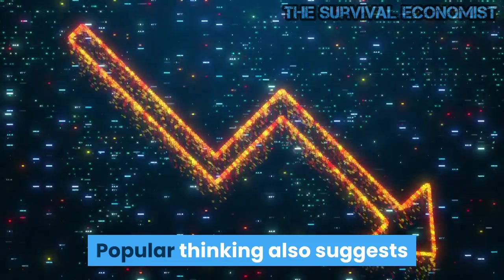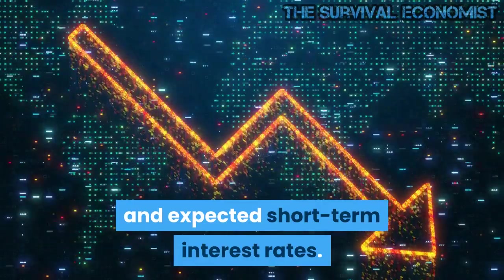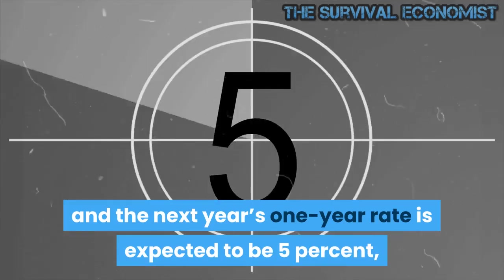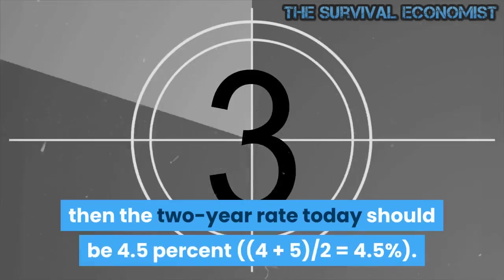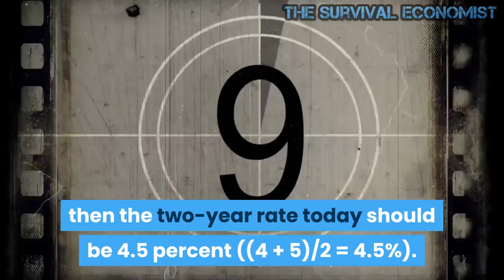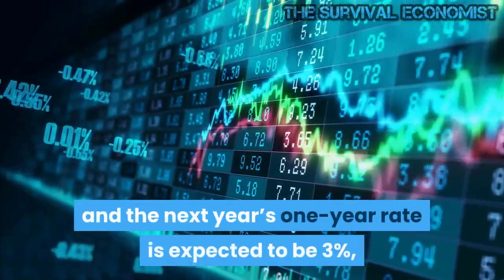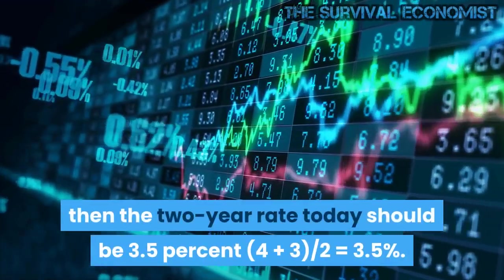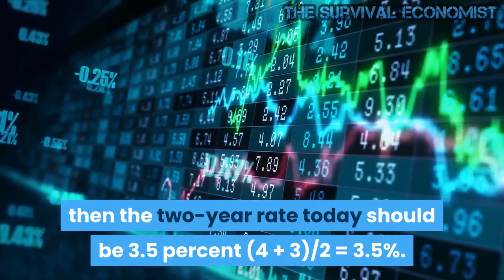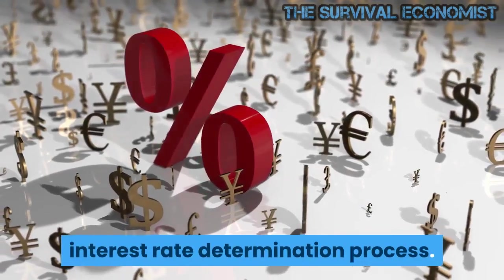Popular thinking also suggests that long-term rates are the average of current and expected short-term interest rates. If today's one-year rate is 4% and the next year's one-year rate is expected to be 5%, then the two-year rate today should be 4.5% — (4+5)/2 = 4.5%. Conversely, if today's one-year rate is 4% and the next year's one-year rate is expected to be 3%, then the two-year rate today should be 3.5% — (4+3)/2 = 3.5%. Hence, it would appear that the central bank is the key in the interest rate determination process.